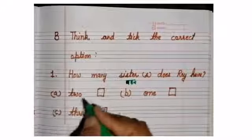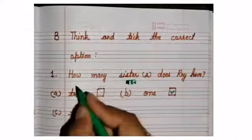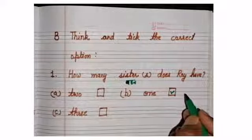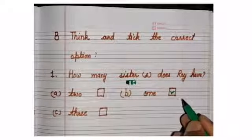So, Roy ki kitni behen hai? 1. Right option is 1. Roy ki ek behen hai. Roy has one sister.